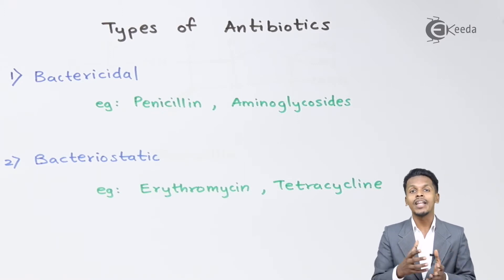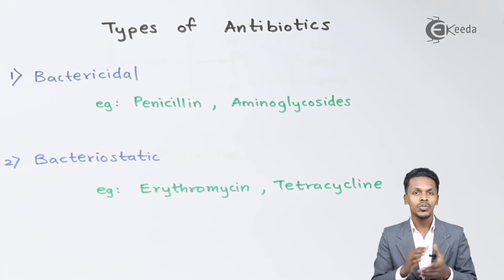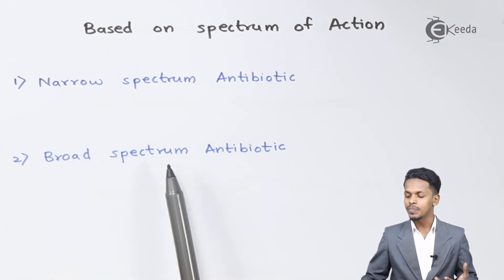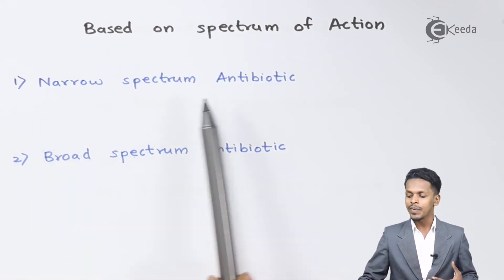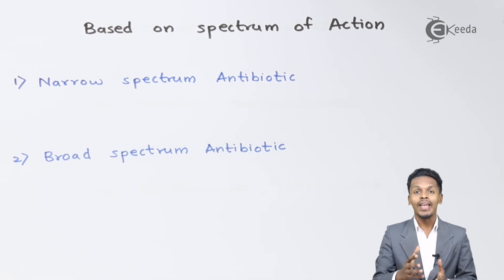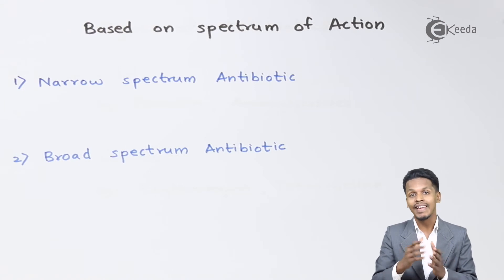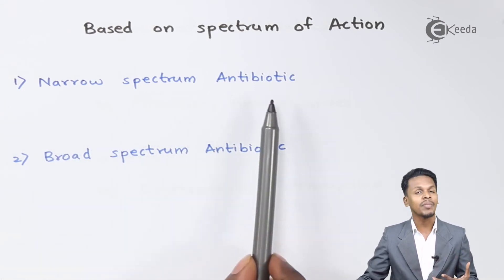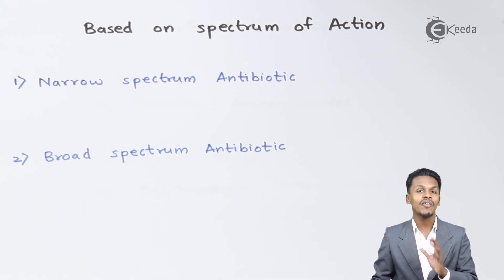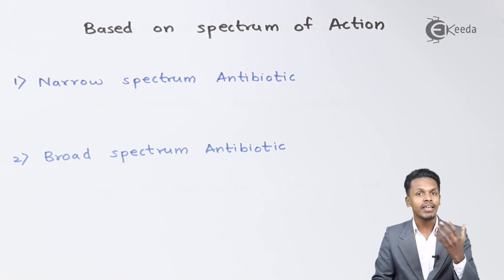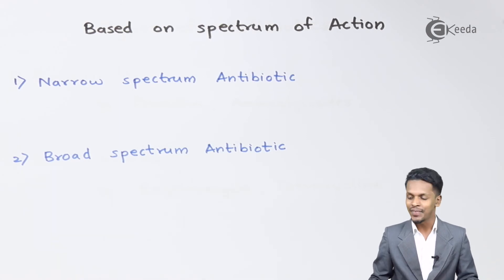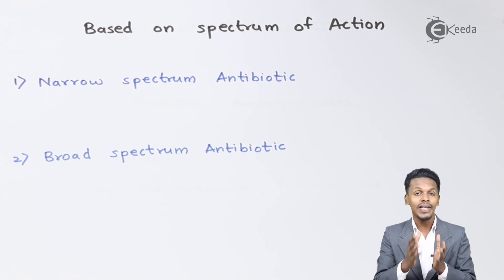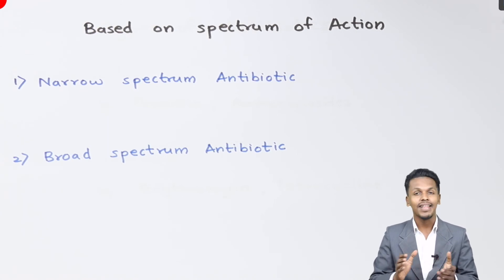Antibiotics are also classified depending on their spectrum of action, divided into two types: narrow spectrum and broad spectrum. Narrow spectrum antibiotics have an effect against either gram-positive or gram-negative bacteria, but not both. Broad spectrum antibiotics have a wide range of action and can affect both gram-positive and gram-negative bacteria. This covers what an antibiotic is and the types of antibiotics.